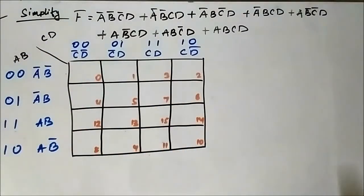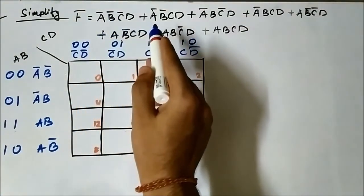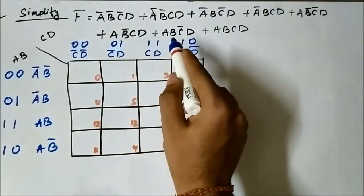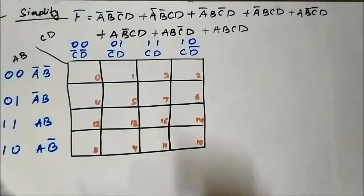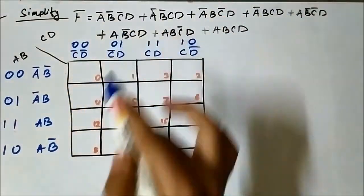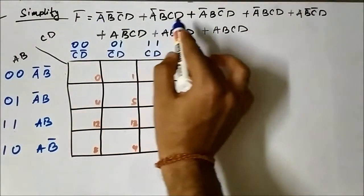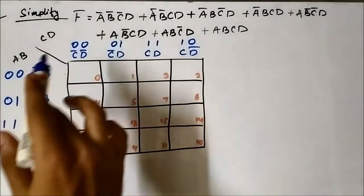So this is the format of the 4-variable K-map. The boolean expression given is: A̅B̅C̅D + A̅B̅CD + A̅BC̅D + A̅BCD + AB̅C̅D + AB̅CD + ABC̅D + ABCD — this is a lengthy expression. We can see it is in SOP form — sum of products form. These are all product terms or minterms added together, so SOP K-map is applicable.